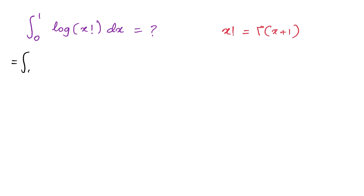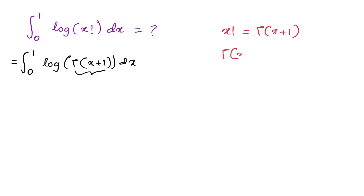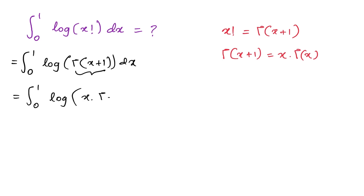So we can write our integral as the integral from 0 to 1 of ln(Γ(x+1)) dx. Now, we know that Γ(x+1) is equal to x times Γ(x), so we can substitute and write the integral from 0 to 1 of ln(x · Γ(x)) dx.